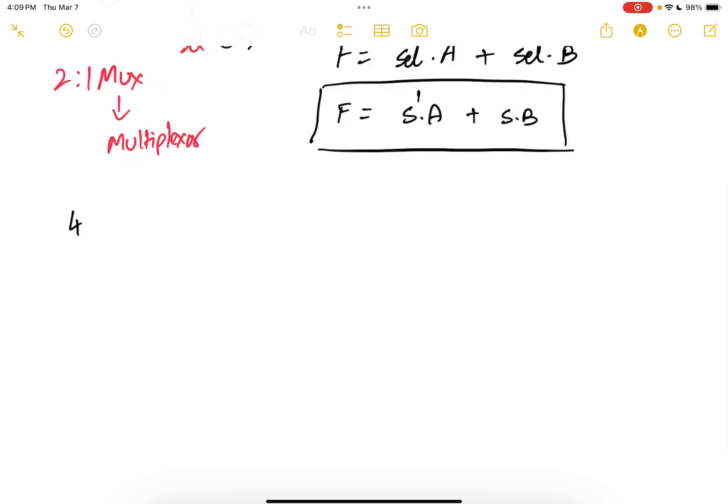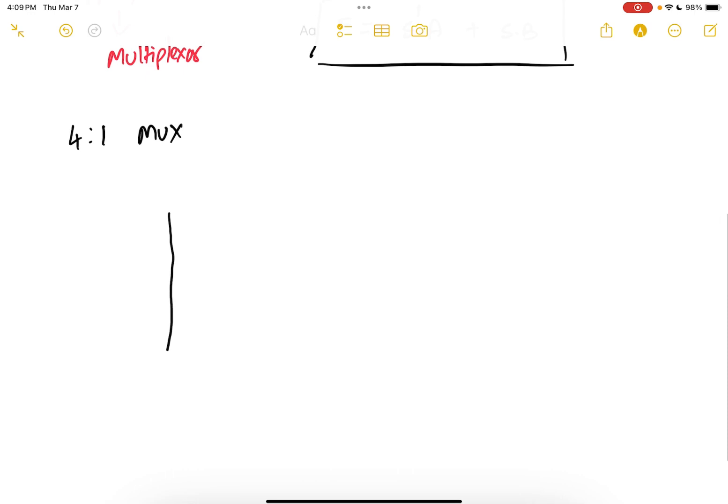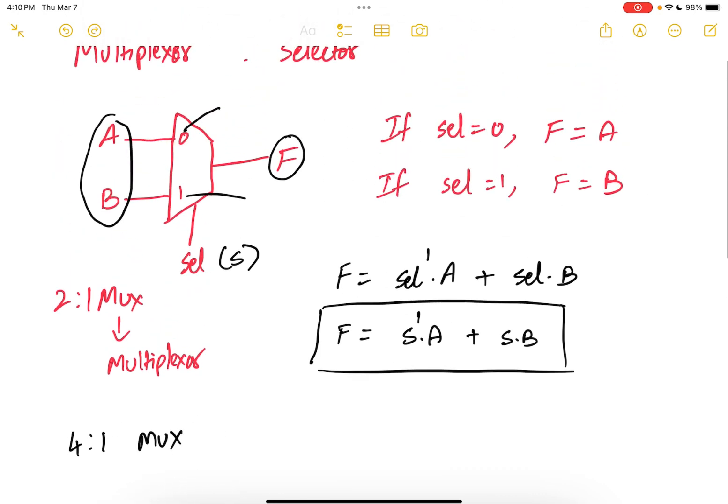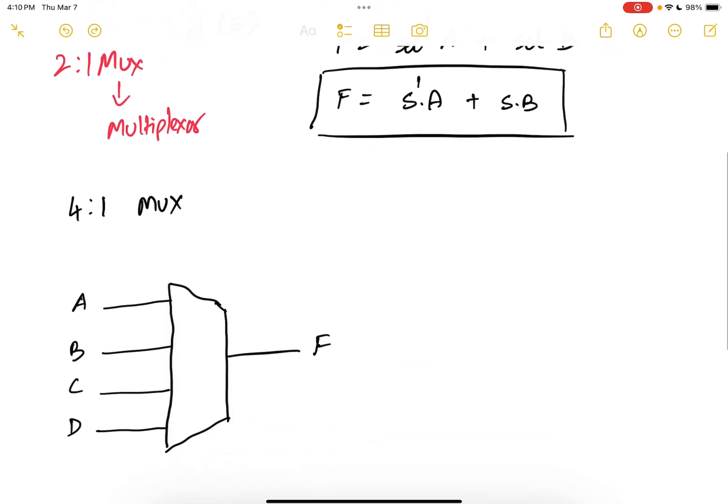Then you can also have a 4 to 1 MUX. So in your 4 to 1 MUX, you are going to have four inputs and one output. The four inputs can be A, B, C, D. So to select, if you look at your 2 to 1 MUX, to select one of the two inputs, you need a 1 bit SELECT line. But in a 4 to 1 MUX, if you want to select one of the four inputs, you would need to have a 2 bit SELECT line.